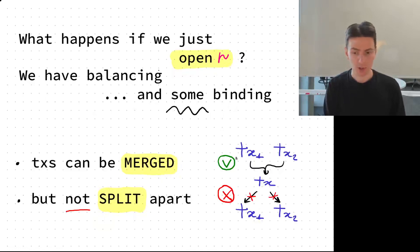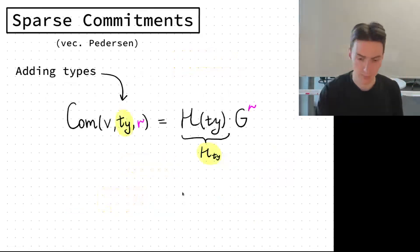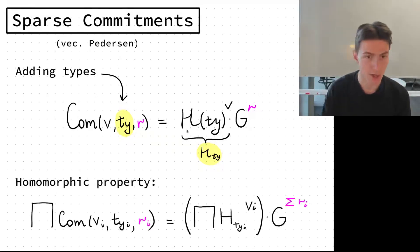The first thing that we change is the commitment scheme. We add types into it. Now the type is hashed first and this hash of type is the new base H of type, and we use different base for different types. This is how we arrive at this vector Pedersen commitment scheme with a very interesting homomorphic property such that different types produce different bases and so the values of different types are not summed together.